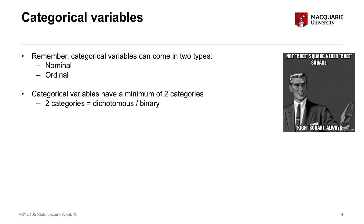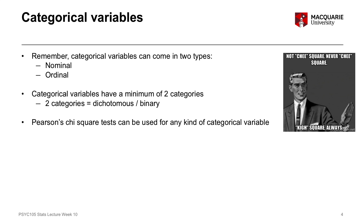Two-category variables are called something special — they're called dichotomous variables or binary variables. The chi-square tests we're talking about today, specifically Pearson's chi-square tests, come in two different forms and can be used for any of these kinds of categorical variables — nominal or ordinal, variables with two categories or variables with three, four, five, or six or more categories. There's no limit.